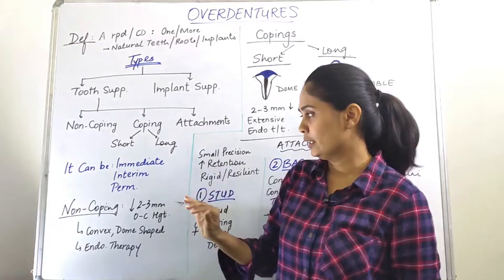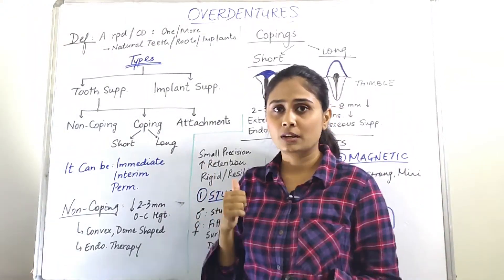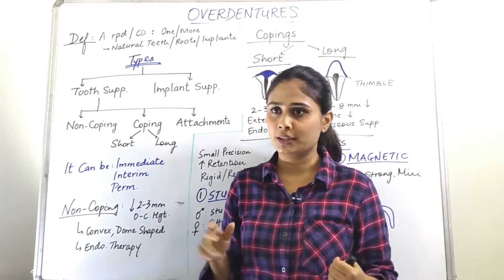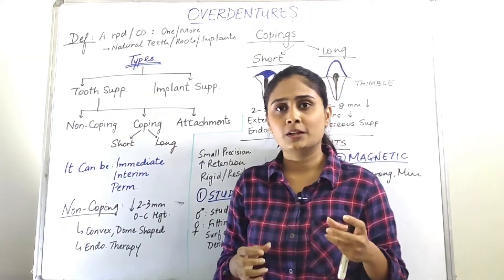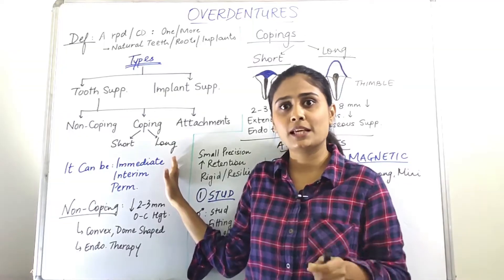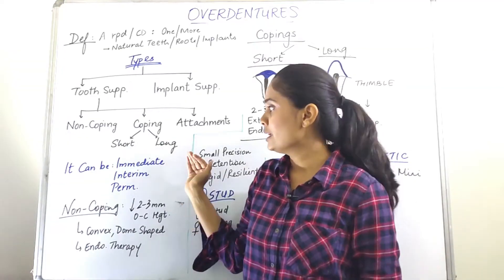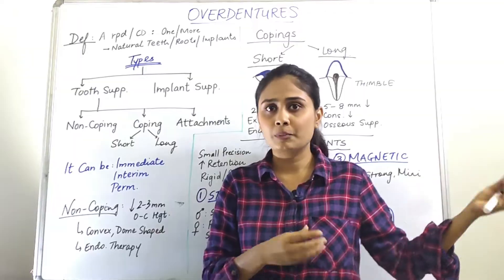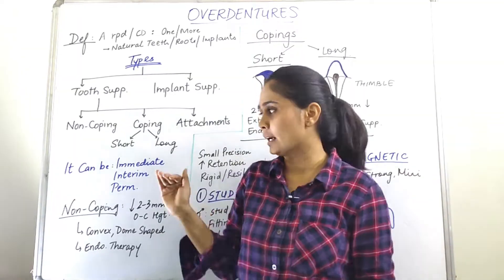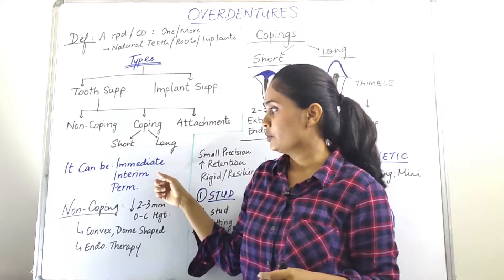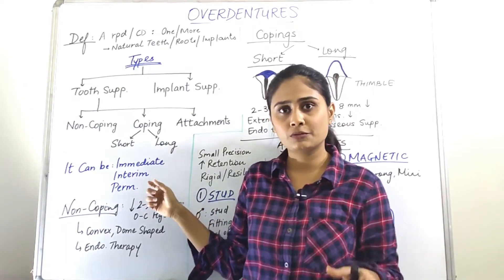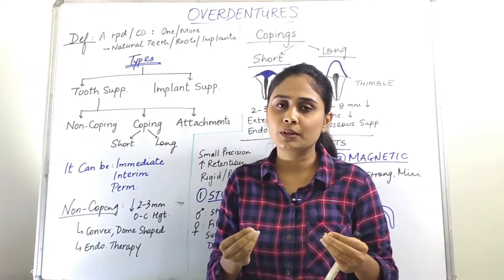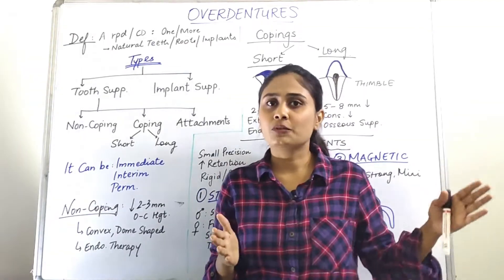Overdentures can also be classified into three types by timing: immediate, interim, or permanent. Immediate is when you extract the tooth and place the overdenture retention unit at the same appointment. Interim is when, during a long-term treatment plan, the patient needs something urgent mid-course. Permanent is when you fabricate an overdenture, give it to the patient, and they use it for a long period of time.